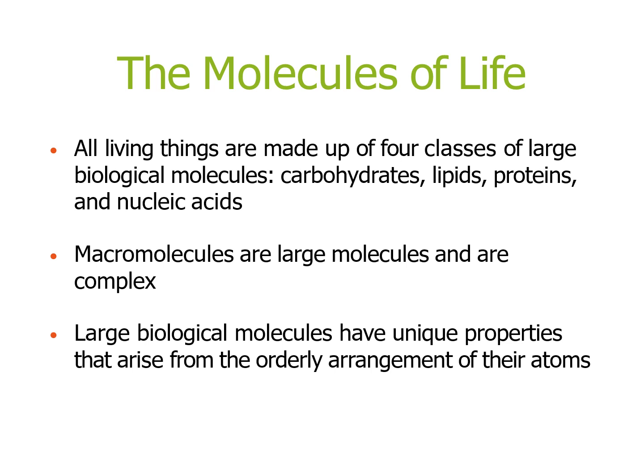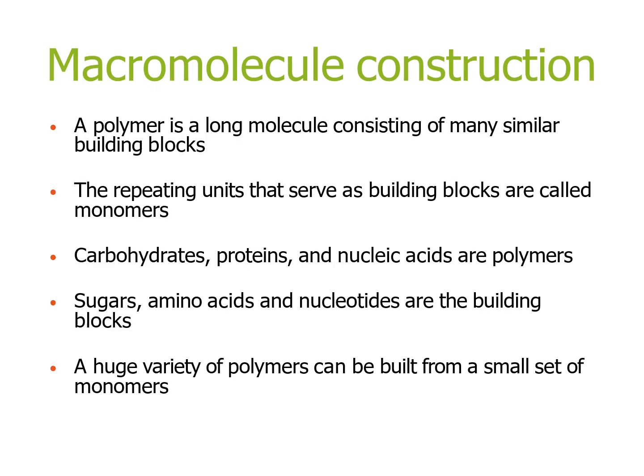All living things are made up of four classes of large biological molecules: carbohydrates, lipids, proteins, and nucleic acids. Macromolecules are large, complex molecules. Large biological molecules have unique properties that arise from the orderly arrangement of atoms. A polymer is a long molecule consisting of many similar building blocks; the repeated units are called monomers. Examples of polymers are carbohydrates, proteins, and nucleic acids.